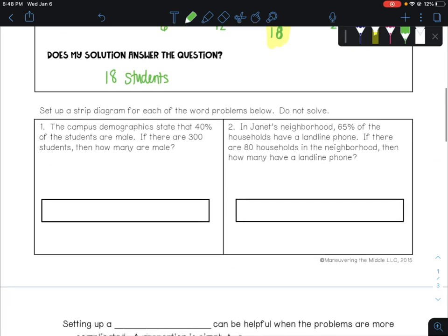A couple more examples. We're not going to solve. We're just going to set them up with a diagram to see if we can get a feel for what this diagram does. The campus demographics state that 40% of students are male. If there are 300 students, then how many are male? The 300 students isn't a small group. It's everyone. So we know that that's our whole value. We have 40% and 300 as our whole.